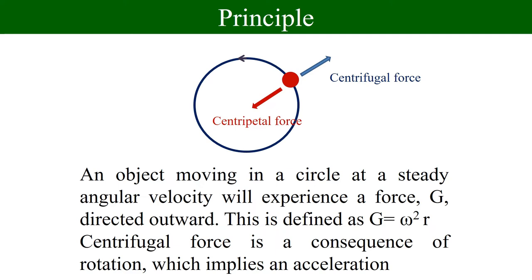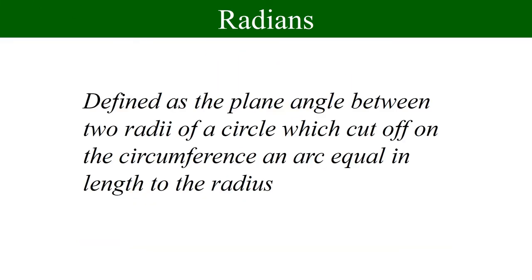In order to overcome this contamination, we apply centrifugal force. The principle of centrifugation is: an object moving in a circle at a steady angular velocity will experience a force G, felt outward, defined as G equals omega squared R. Centrifugal force is a consequence of rotation and implies an acceleration. A radian is the SI unit for measuring angle, defined as the plane angle between two radii of a circle that cut off on the circumference an arc equal in length to the radius.